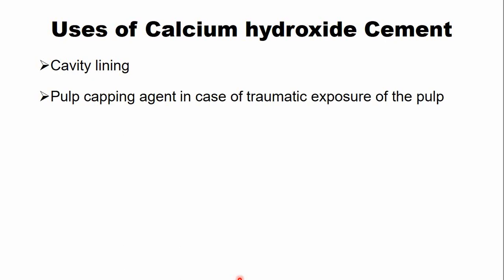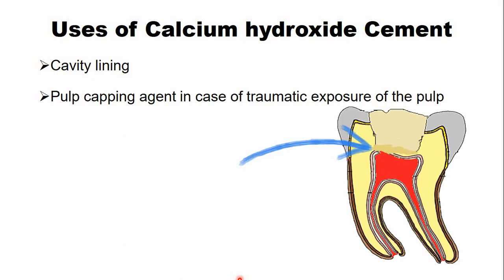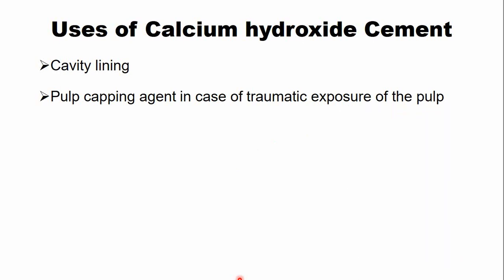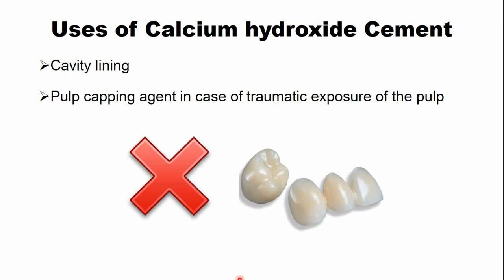Calcium hydroxide cement is used as a pulp capping agent in cases of traumatic exposure of the dental pulp during a dental procedure, in order to preserve the vitality of the dental pulp. This cement is a weak cement and therefore is not suitable for cementation, whether temporary or permanent, of crowns and bridges.